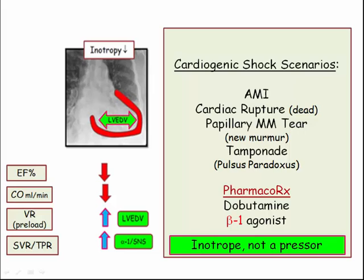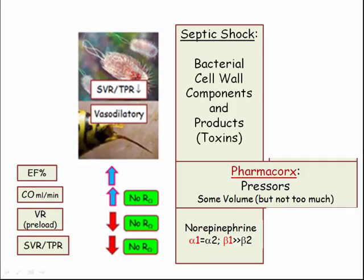As a beta-1 agonist acting through cyclic AMP, dobutamine increases contractility and, as such, may increase myocardial oxygen demand. It also has mild beta-2 effects and may cause a decrease in total peripheral resistance, which underscores its role as an inotrope and not a pressor.